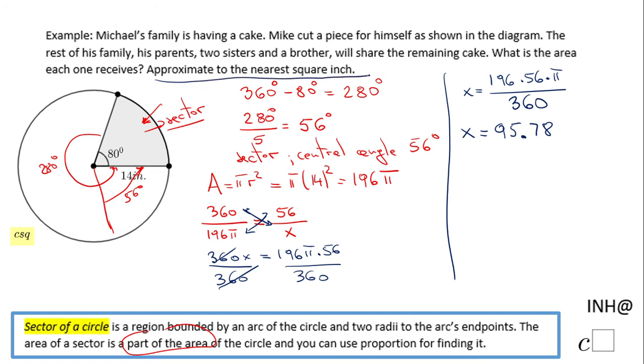approximate to the nearest square inch. So each member of the family is going to receive approximately 96 square inches of this cake.